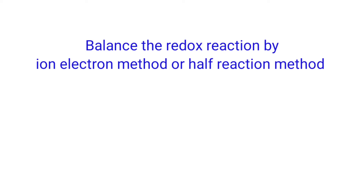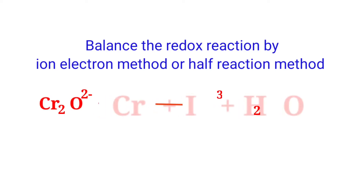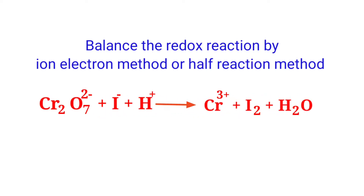Balance the Redox Reaction by Ion Electron Method or Half Reaction Method. Dichromate plus iodine ion plus hydrogen ion gives us chromium ion plus iodine plus water.